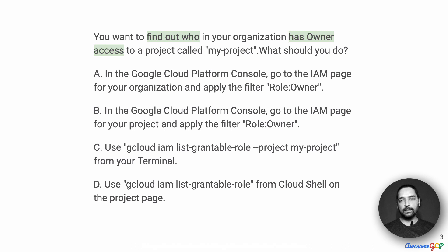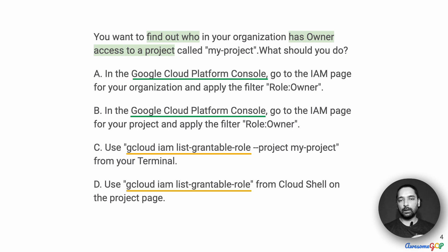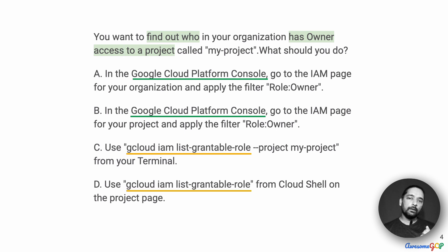The question is fairly straightforward — we just have to find out who has owner access to a project within your organization. In looking at the options, there are two groups that you can consider separately. One, you can approach this via the Google Cloud Platform Console, or you can access this via gcloud. Both of these options are available, and we might be able to eliminate one group.